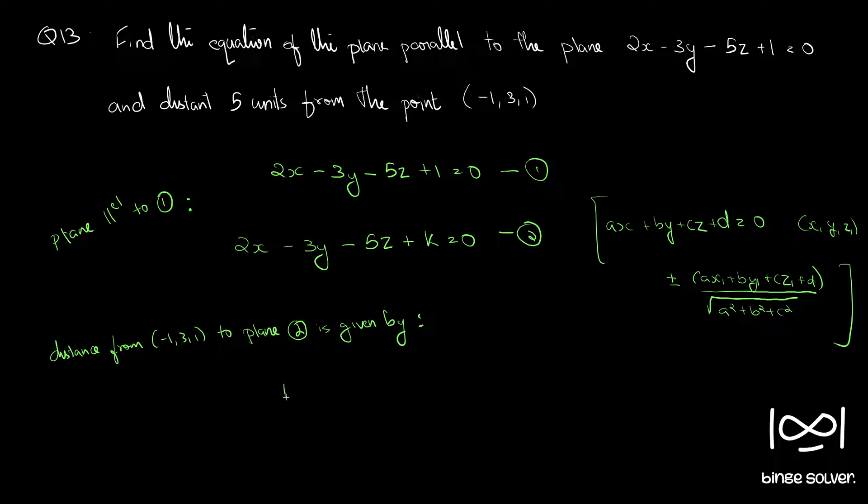Here plus or minus 2 into x1, x1 is minus 1, minus 3 into y1, y1 is 3, minus 5 into z1, z1 is 1, plus k.